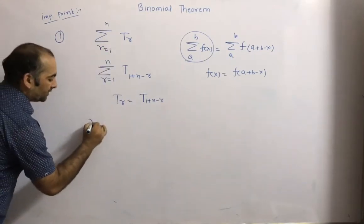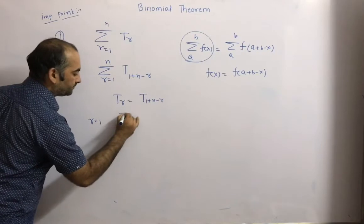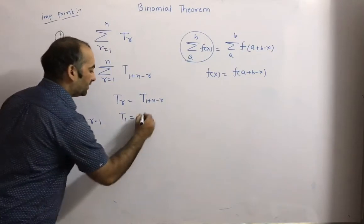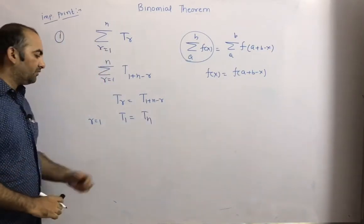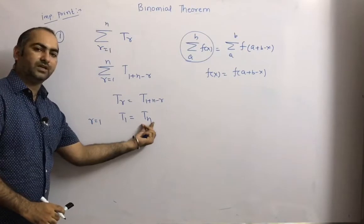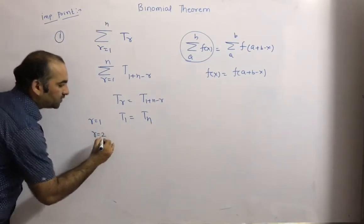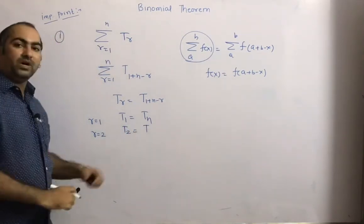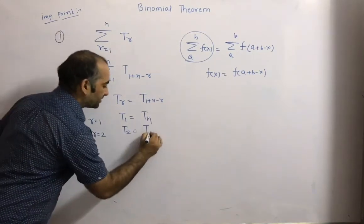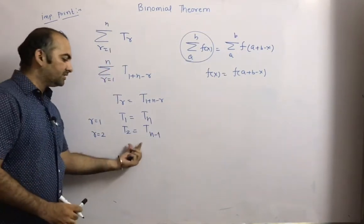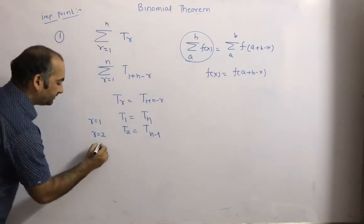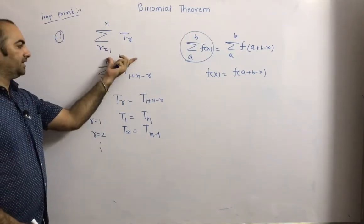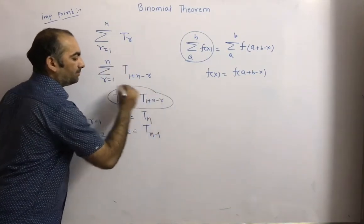For example, if you put r=1, then t_1 equals t_{1+n-1}, which gives t_n. Similarly, if r=2, t_2 equals t_{1+n-2} = t_{n-1}. So in a symmetrical series, the first term equals the last term, the second term equals the second last term, and so on. We can say the series is symmetric if t_r equals t_{1+n-r}.